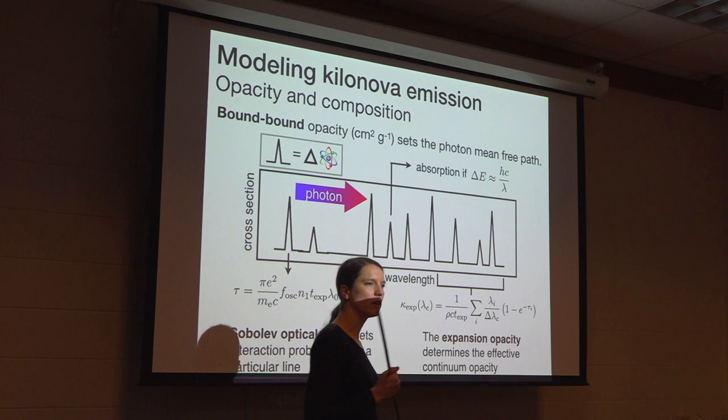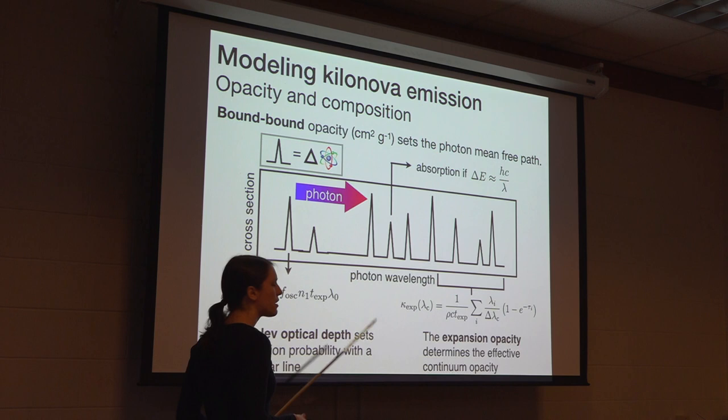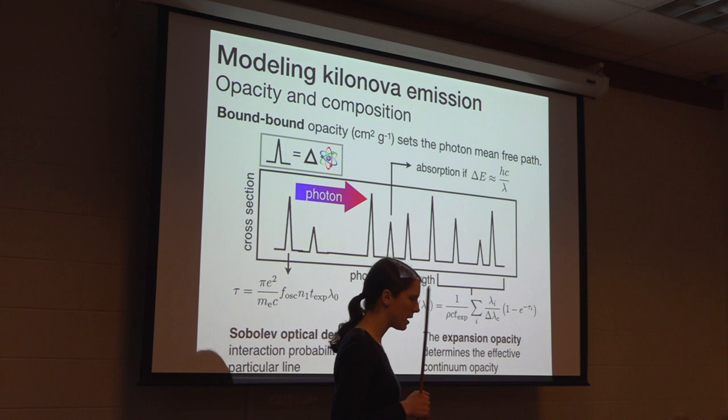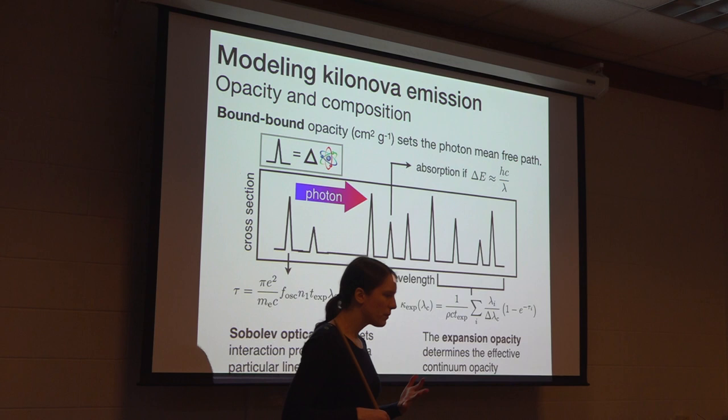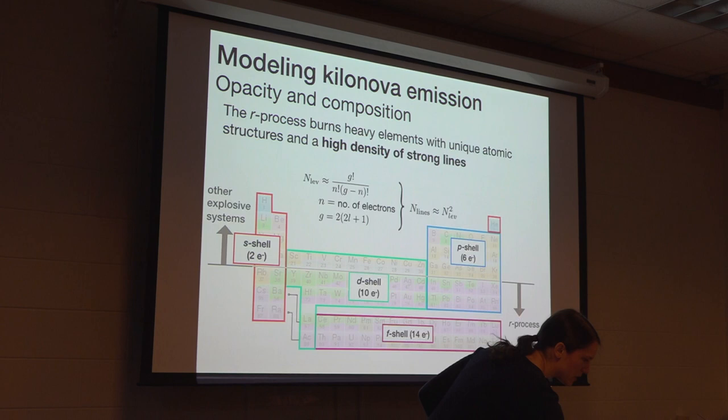From this formula, you can convince yourself that it's more effective — if your goal is to inhibit photon transport — to have a lot of moderately strong lines than to have a single very strong absorber in the ejecta. So to understand what the expansion opacity is, we really need to understand the density of strong lines in wavelength space for the R-process ejecta.